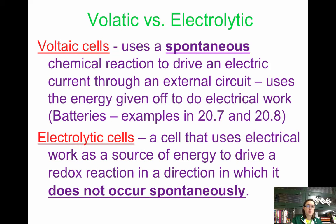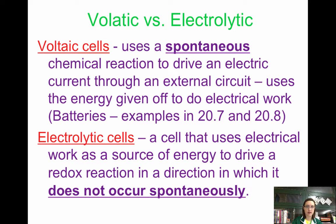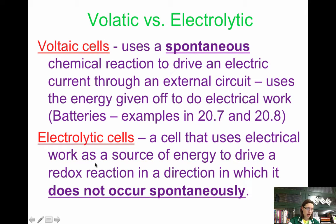The difference between voltaic and electrolytic is that electrolytic cells do not occur spontaneously. It's a cell that actually uses electricity in order to pull electrons through a wire — it's almost the opposite of a voltaic cell. The voltaic cell is a battery; the electrolytic cell needs a battery in order to work.